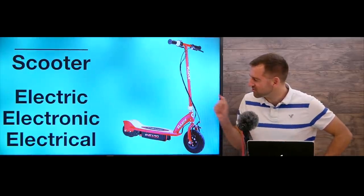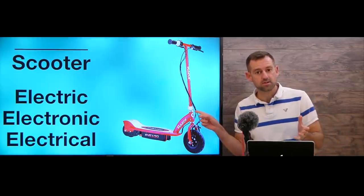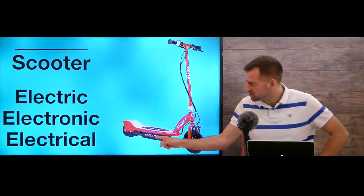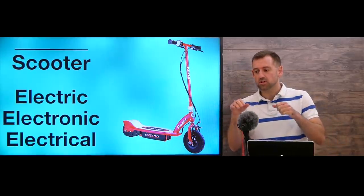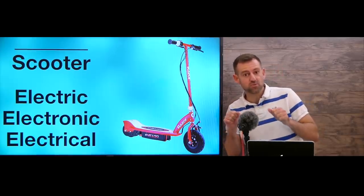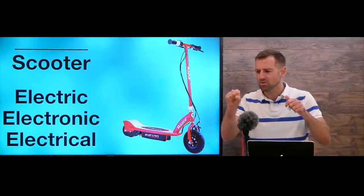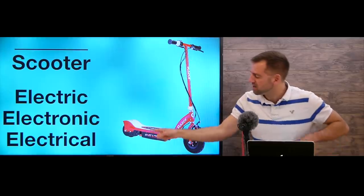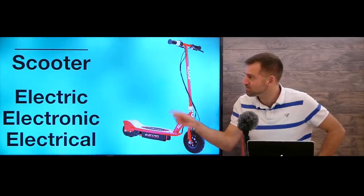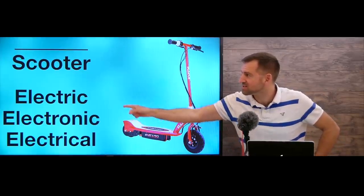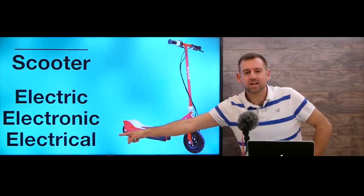Okay, let's take a look at the first question. What is this? Well, this is a scooter, but it's a special scooter because it has a battery. You can control it without pushing, without moving your leg. You could just stand on there and push a button — it uses electricity to go. So what do we call this? Is it called an electric scooter, an electronic scooter, or an electrical scooter?